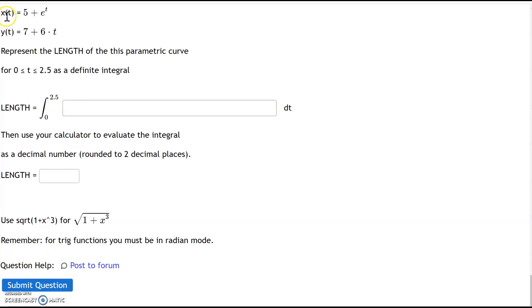We have the parametric curve x of t equals 5 plus e to the t power and y of t equals 7 plus 6 times t. Represent the length of the parametric curve from t equals 0 to 2.5 as a definite integral, and then use your calculator to evaluate the integral.